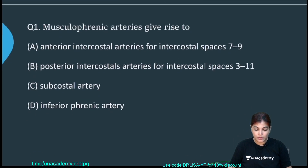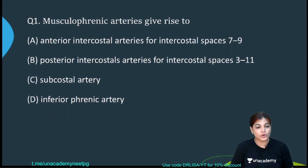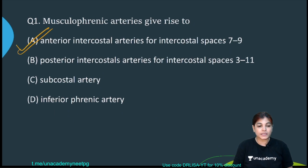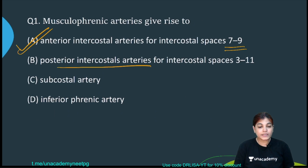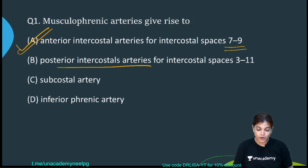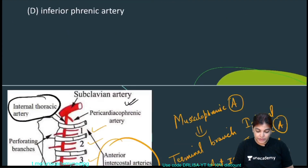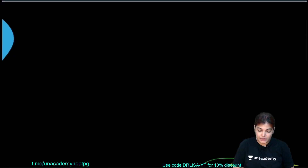So the correct answer is option A — anterior intercostal arteries for intercostal spaces 7, 8, and 9 are branches of the musculophrenic artery. Regarding option B, the posterior intercostal arteries for intercostal spaces 3 to 11 are branches of the thoracic aorta. Options C and D — subcostal artery and inferior phrenic artery — I will explain further.